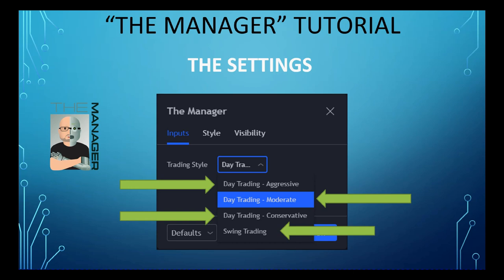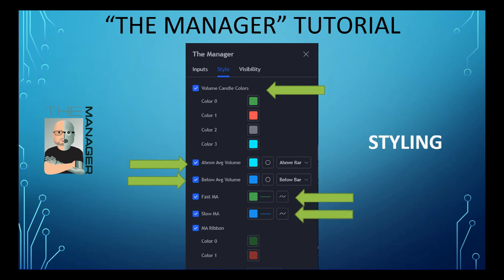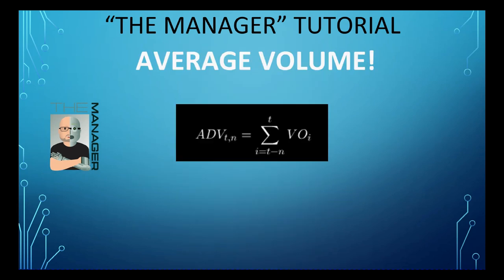We also use day trading conservative for a more aggressive type of swing trading setting. There are some styling options — you can change the volume candle colors, but we teach using green, red, gray, and cyan to identify volume behavior. Above average volume is set to circle and cyan; you can change the shape and color if you wish. Below average volume is set to blue circle below the candle. The MA ribbon — do not change those green and reds; they are set to identify when the bias changes from green to red on that EMA cloud.